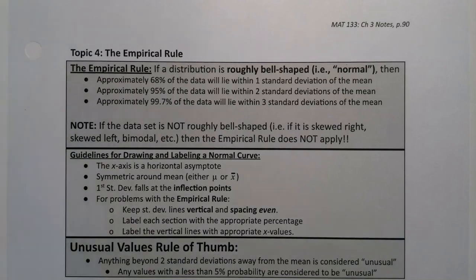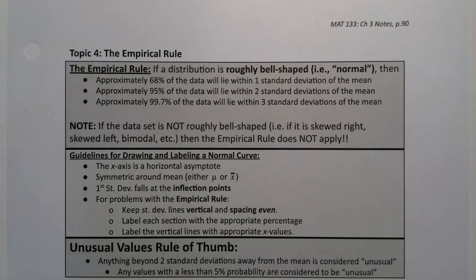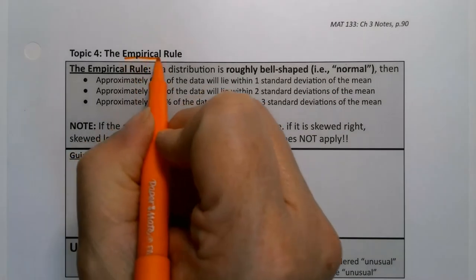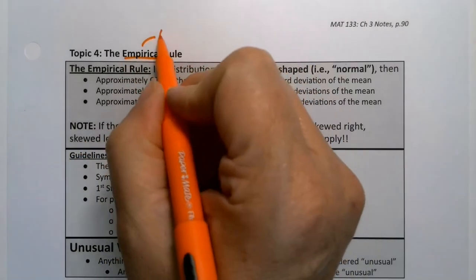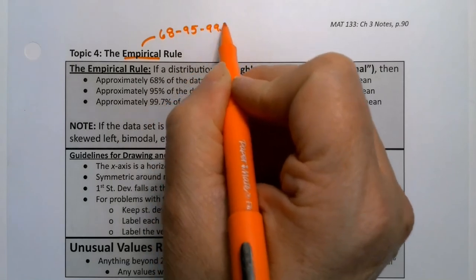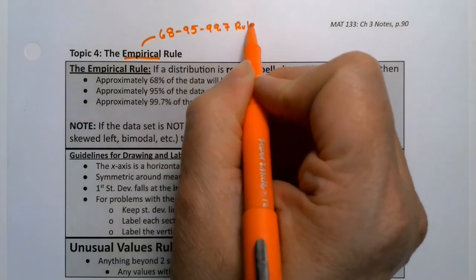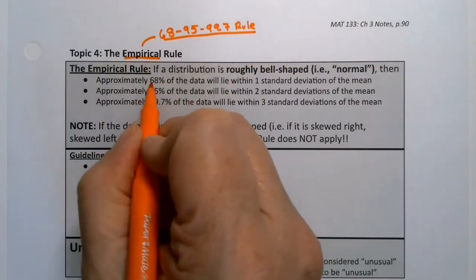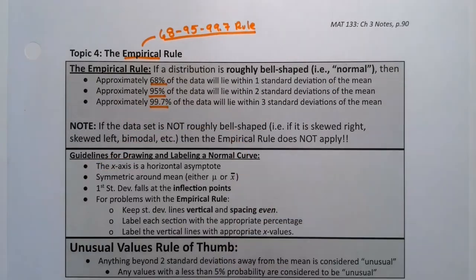The last topic to discuss in section 3.2 is the empirical rule. Now the empirical rule sometimes goes by the 68, 95, 99.7 rule. You'll actually see that online in other books, and it comes from these three percentages.